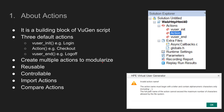An action is nothing but a building block of a VuGen script. Whenever you create a new script in VuGen, three default actions will be created: vuser_init, action, and vuser_end. These actions are the building blocks and you must have all three. If you delete anything in the backend, your script will be corrupted.